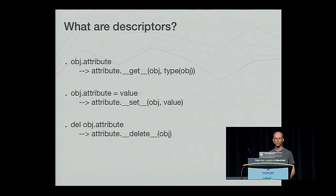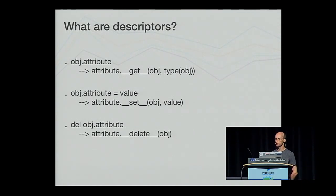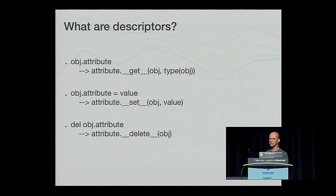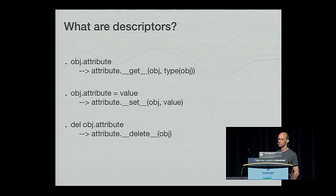So let's go back and look at these descriptors, as they turn out to be a key mechanism in all of this. A descriptor is an object attribute with binding behaviour, one whose attribute access has been overridden by methods in the descriptor protocol. These methods are __get__, __set__, and __delete__. If any of those methods are defined for an object, it is said to be a descriptor. This means that if an attribute of a class has any of these special methods defined, when the corresponding operation is performed on that attribute, those methods will be called instead of the default action.